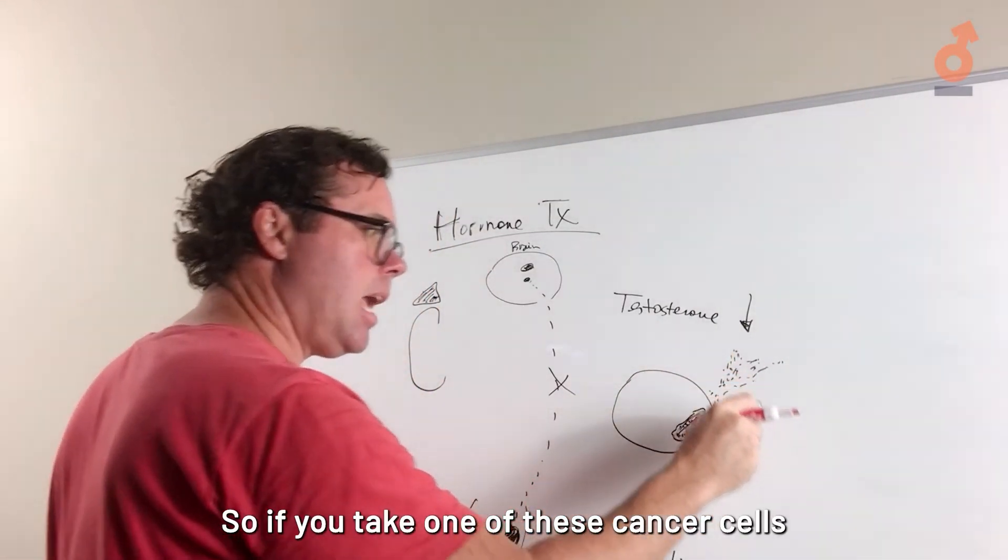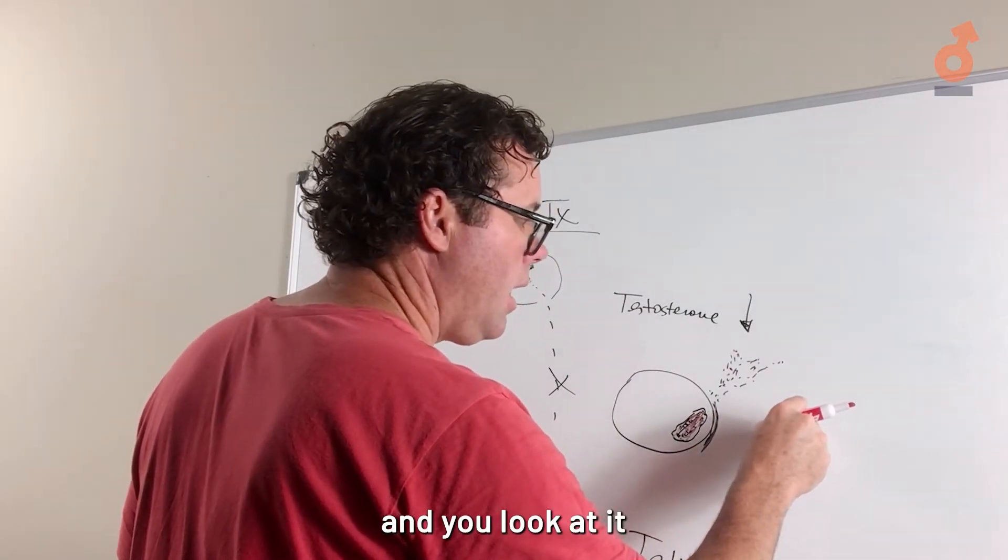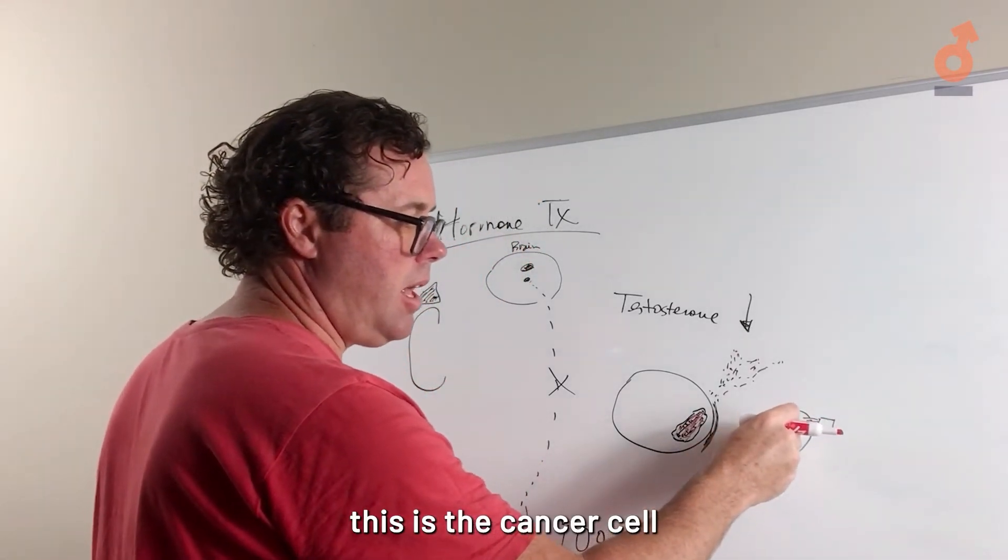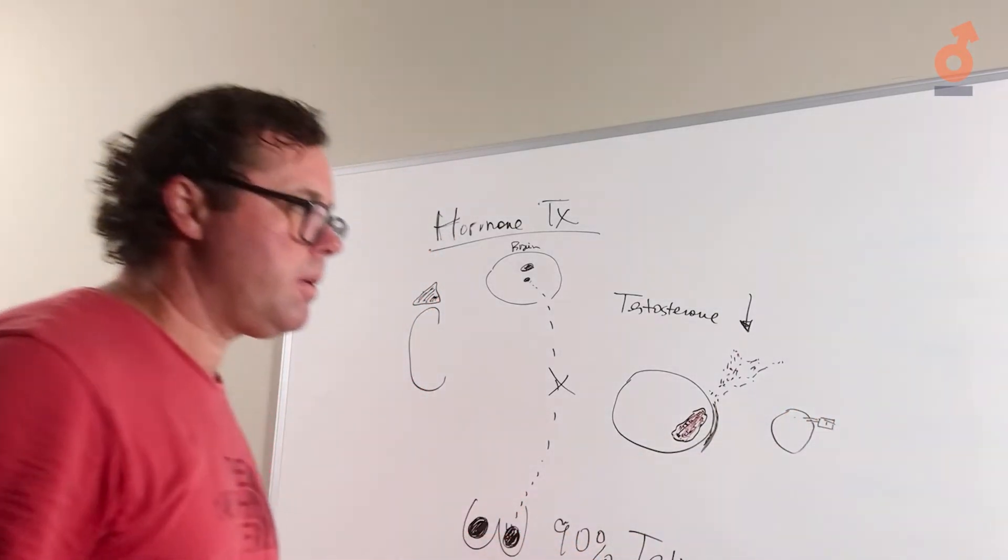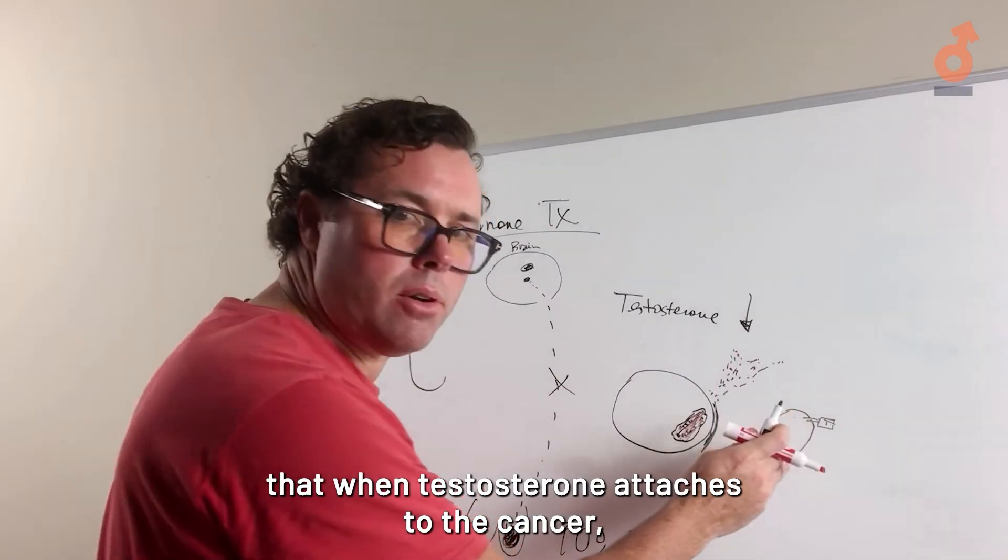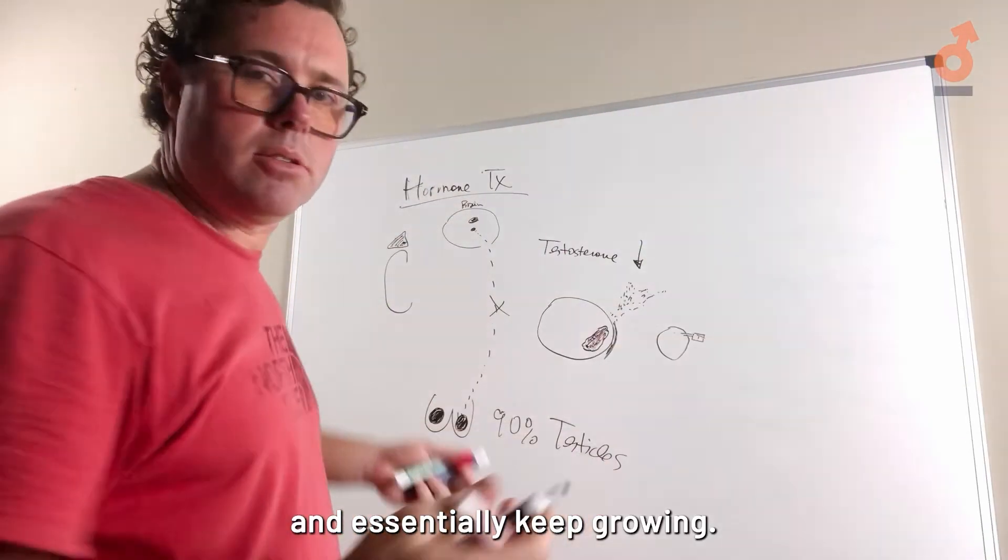If you take one of these cancer cells and look at it, this is the cancer cell and there's a testosterone receptor. When testosterone attaches to the cancer, it allows the cancer to continue to grow and change.